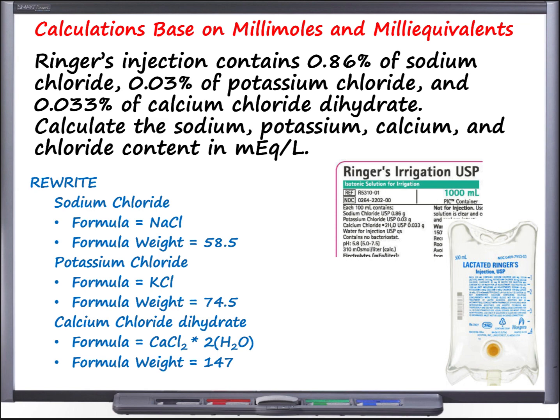Returning to the question, the three main electrolytes we are adding to this solution are: sodium chloride (NaCl) with a formula weight of 58.5, potassium chloride (KCl) with a formula weight of 74.5, and calcium chloride dihydrate (CaCl₂·2H₂O) with a formula weight of 147, since the two water molecules are attached. Let's calculate the amount of each in milliequivalents per liter.